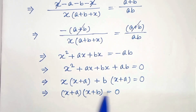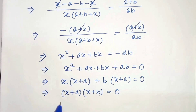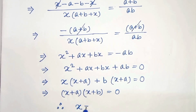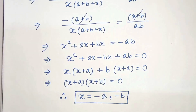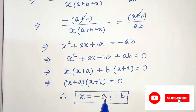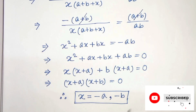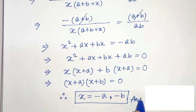So now x + a equals 0 and x + b equals 0. Therefore x equals minus a or minus b. Therefore we have two solutions for x: one is minus a and another is minus b. So these are our solutions.